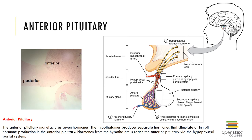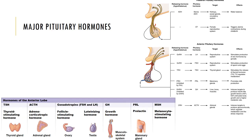The anterior lobe of the pituitary gland is connected to the hypothalamus by the hypophyseal portal system and is controlled by releasing and inhibiting hormones from the hypothalamus. Thyroid stimulating hormone (TSH) targets the thyroid gland and stimulates it to grow and increase its secretion of thyroid hormones T3 and T4, released in response to thyrotropin releasing hormone (TRH) from the hypothalamus.